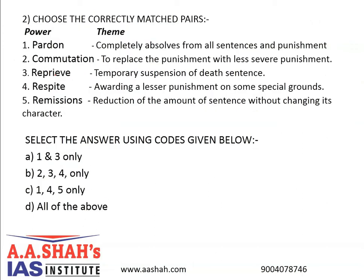Question number 2. Choose the correctly matched pairs — power with theme. Pardon: completely absolves from all sentences and punishment. Commutation: to replace the punishment with less severe punishment. Reprieve: temporary suspension of death sentence. Respite: awarding a lesser punishment on some special grounds. Remissions: reduction of the amount of sentence without changing its character. Select the correct answer using the codes given below. A: 1 and 3 only. B: 2, 3, 4 only. C: 1, 4, 5 only. Or D: All of the above.